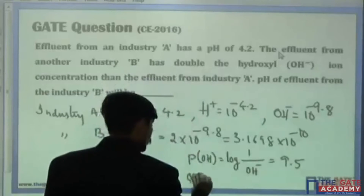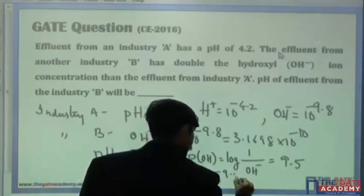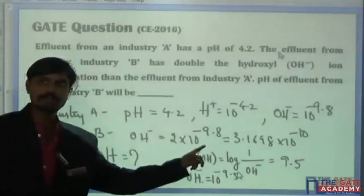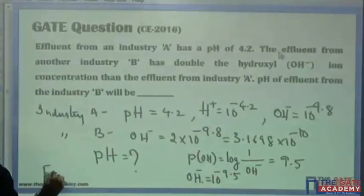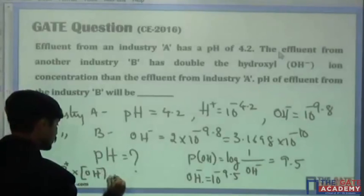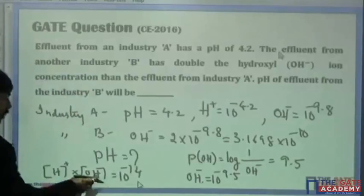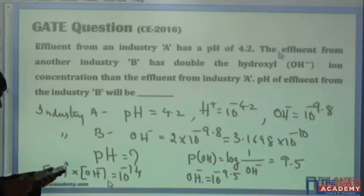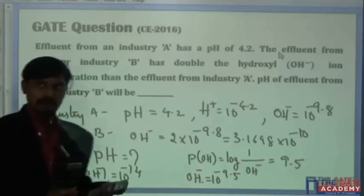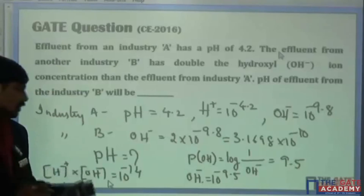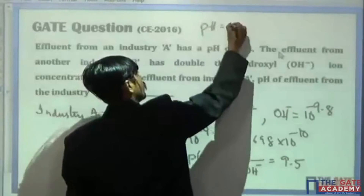This means OH⁻ ions equals 10 to the power minus 9.5. Now, you know that the product of OH⁻ into H⁺ equals 10 to the power minus 14. Calculate H⁺: it equals 10 to the power minus 14 divided by 10 to the power minus 9.5. You are going to get some value — find out the pH from it. You will get pH equal to 4.5.